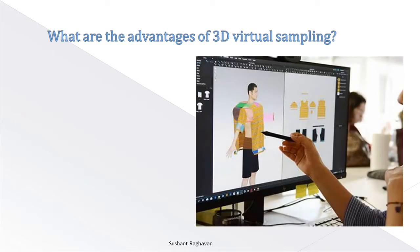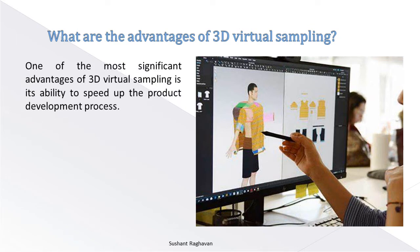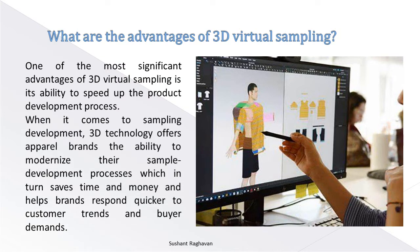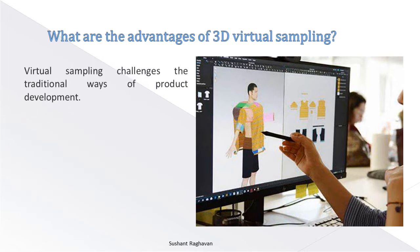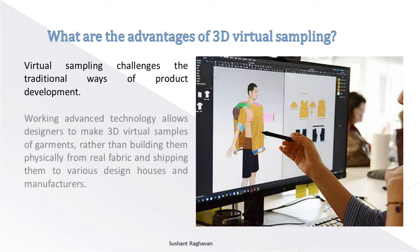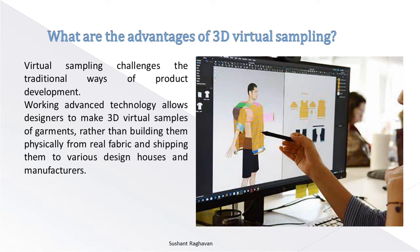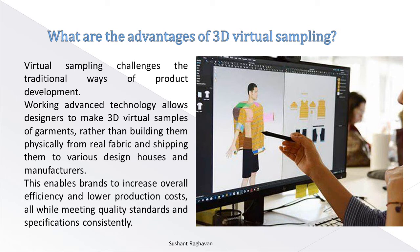One of the most significant advantages of 3D virtual sampling is its ability to speed up the product development process. 3D technology offers apparel brands the ability to modernize their sample development process, which in turn saves time and money and helps brands respond quicker to customer trends and buyer demands. Virtual sampling challenges the traditional ways of product development, allowing designers to make 3D virtual samples of garments rather than building them physically from real fabric and shipping them to various design houses and manufacturers. This enables brands to increase overall efficiency and lower production costs, all while meeting quality standards and specifications consistently.